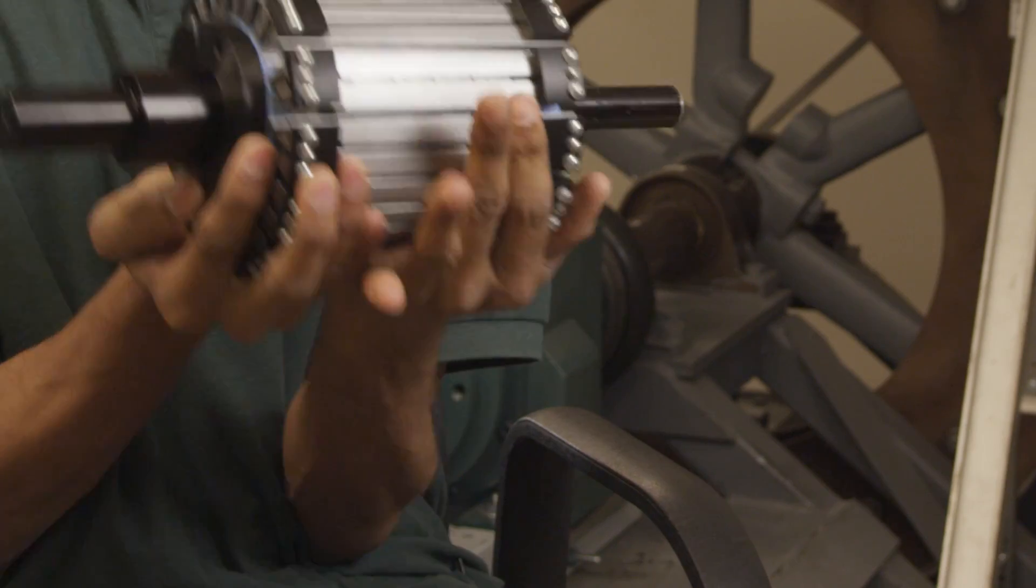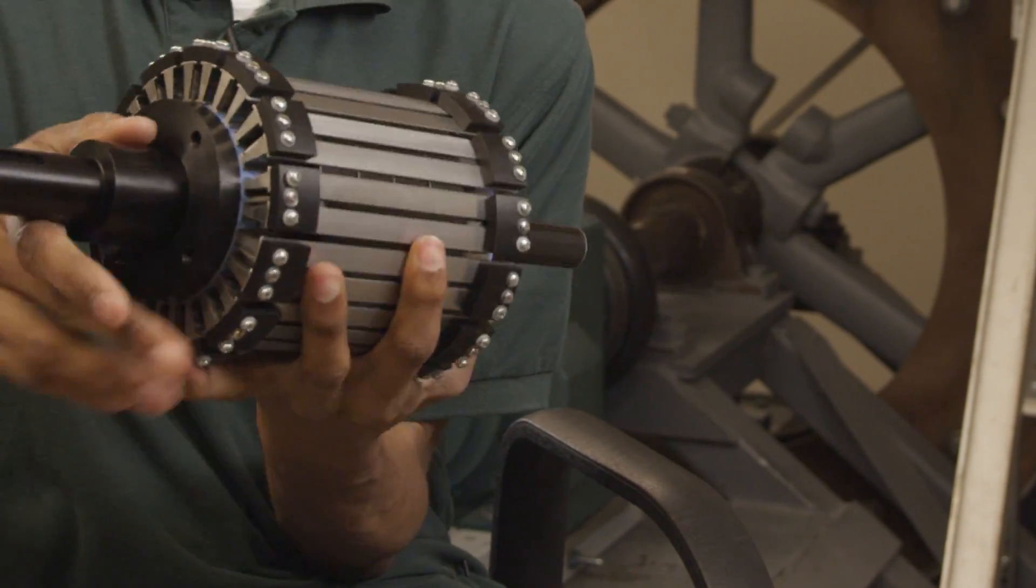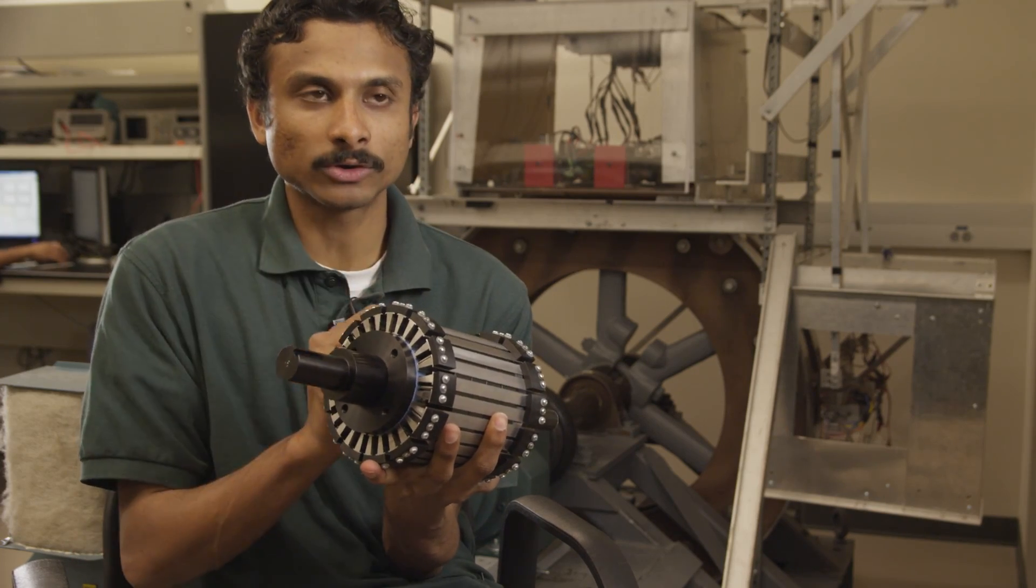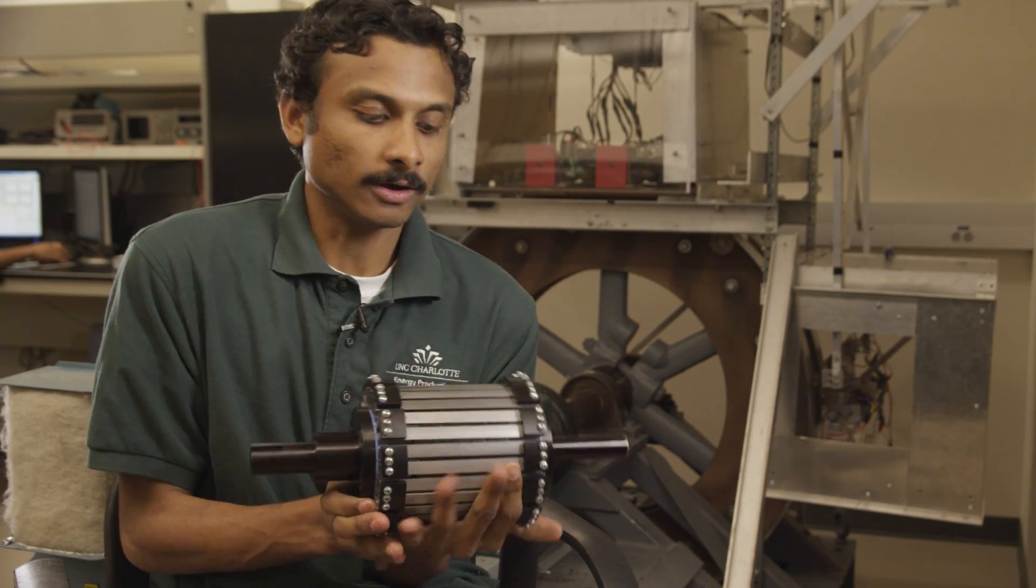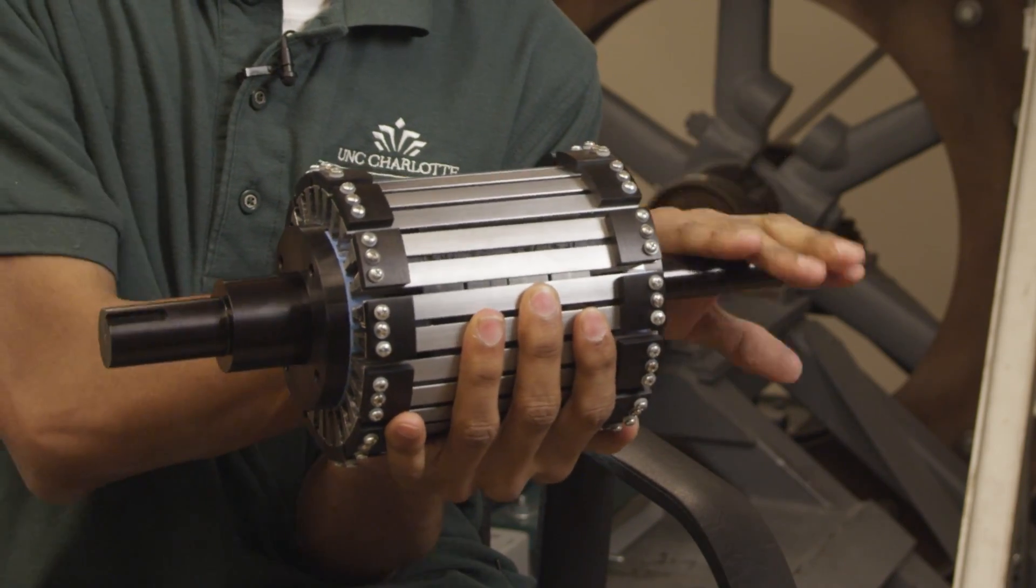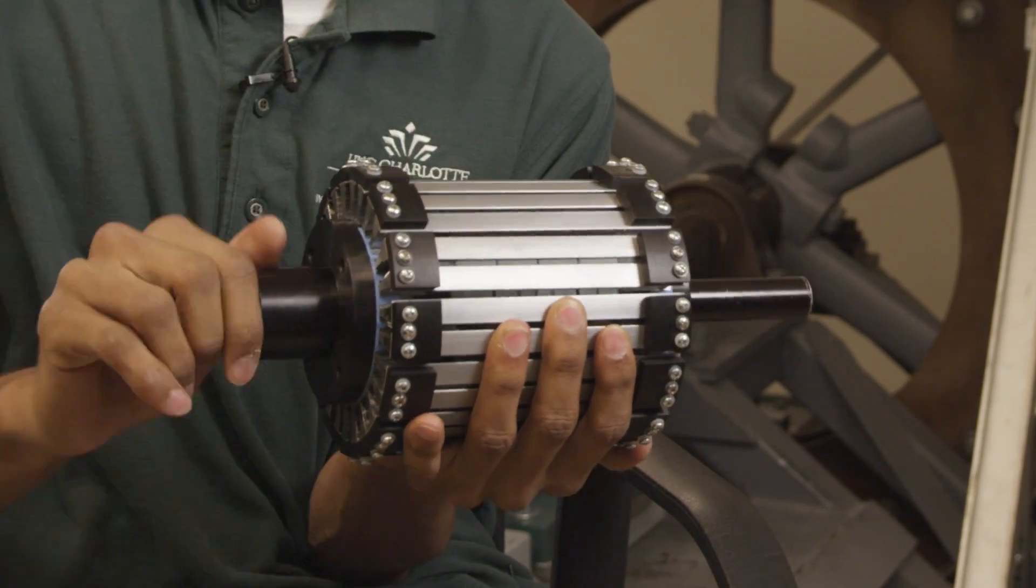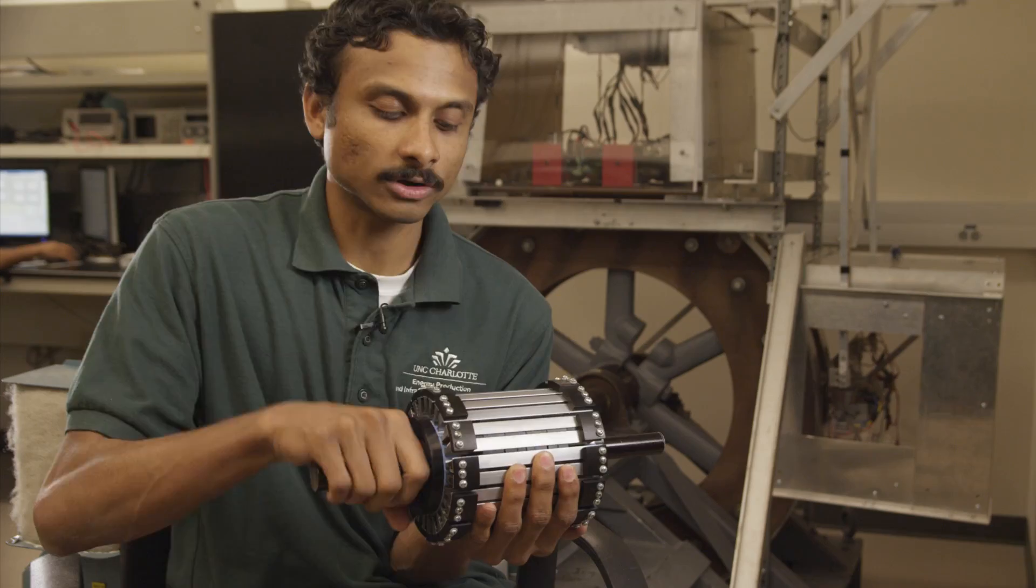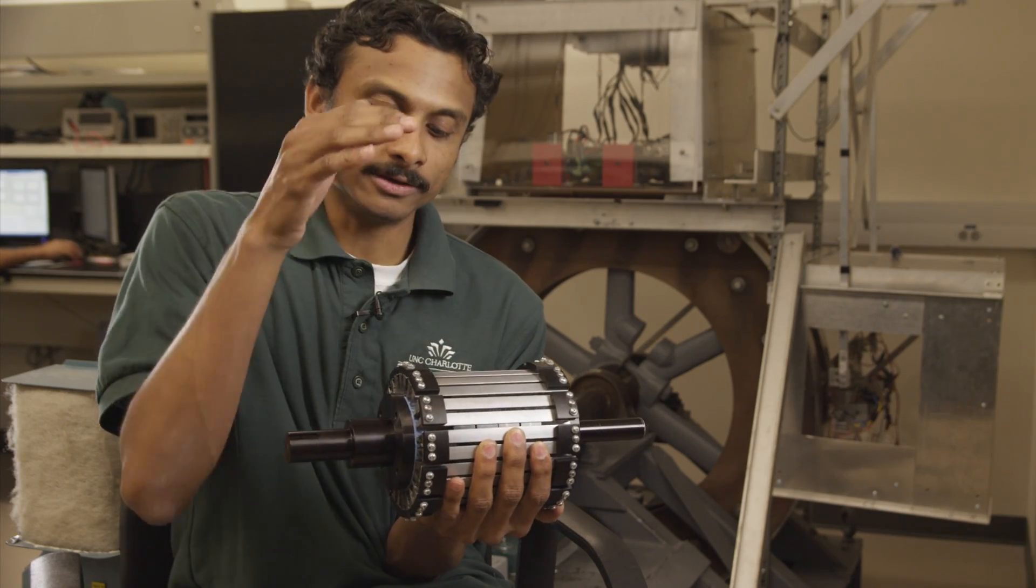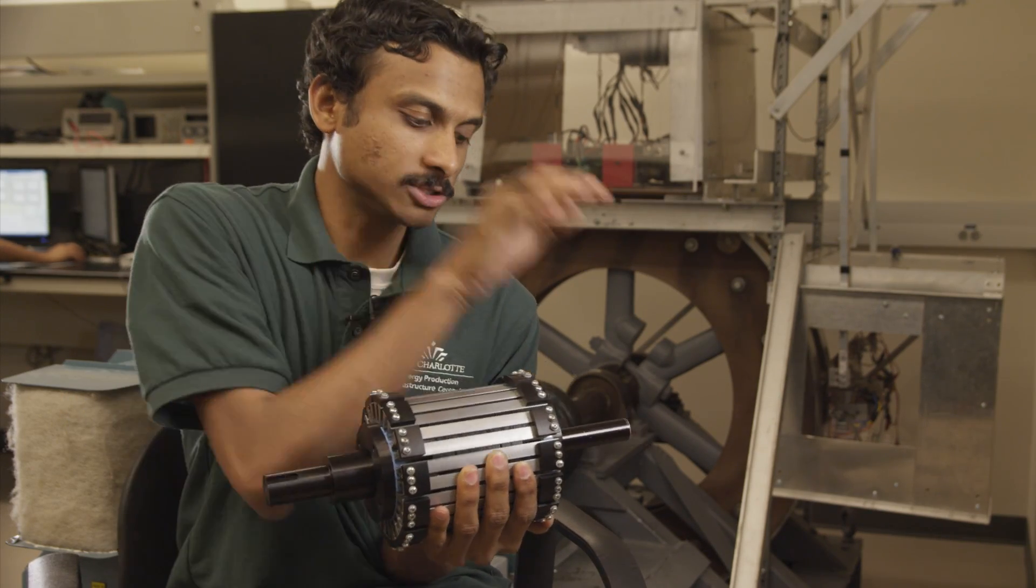What I have in my hand is a completely assembled magnetic gearbox. So this is the outer rotor. There is a cage, the middle rotor and the inner rotor inside. So this shaft connects to the middle rotor and this shaft connects to the inner rotor. The outer rotor is stationary and this is the input side and this is the output side.